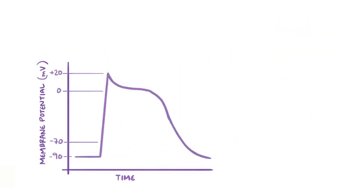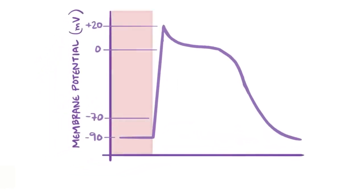Alright, as a quick recap: when the cell's at negative 90 millivolts, it's resting, and all the sodium channels are closed but ready to rock. Once the stimulus comes in, the channels open for a short period during the upstroke.